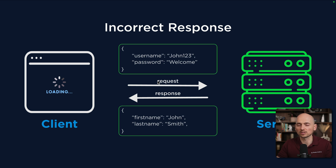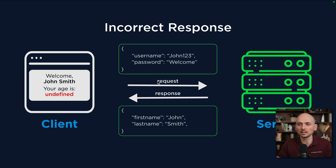So when the client sends username and password, the response comes back with just John Smith but without the age. What's going to happen? In the application you may see something like this: 'Your age is undefined.' And this creates an integration issue and actually a breaking change.